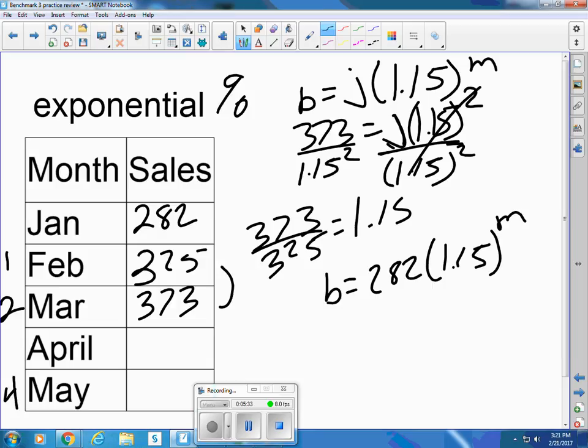So if I wanted to know for month number 4, for example, I would say the number of boards is equal to 282 times 1.15, raised to the 4th. 1.15, raised to the 4th, times 282, 493.